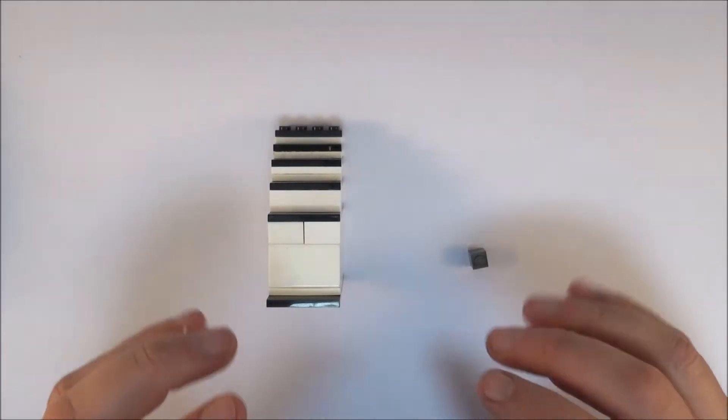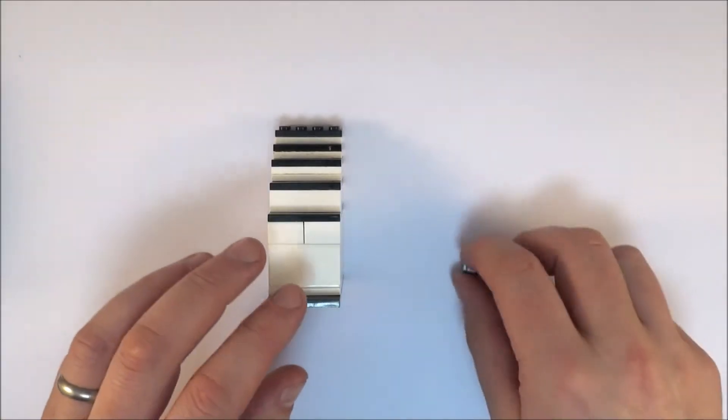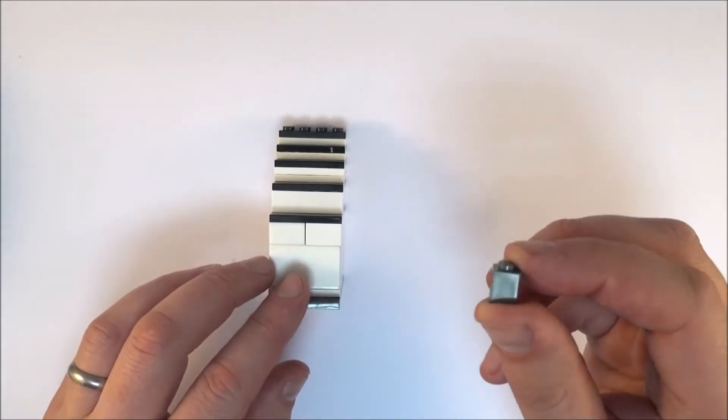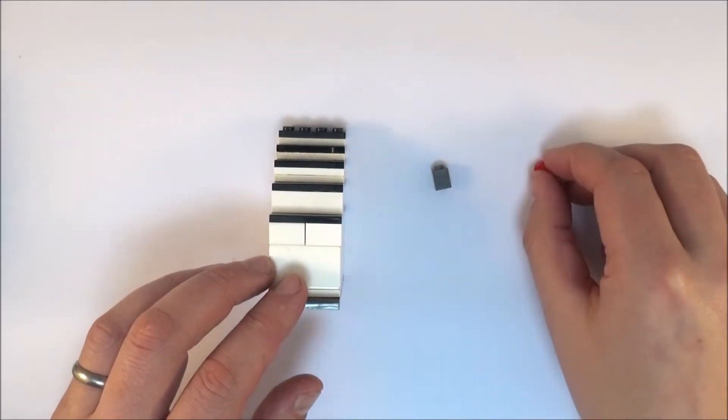Now, in order to understand how a laser works, you need to know about some atomic processes that happen inside the atom. And what I'm going to do is use this thing here to be my electron. We're going to have different photons at different times, so I'm just going to use these smaller bits here to be my photons.